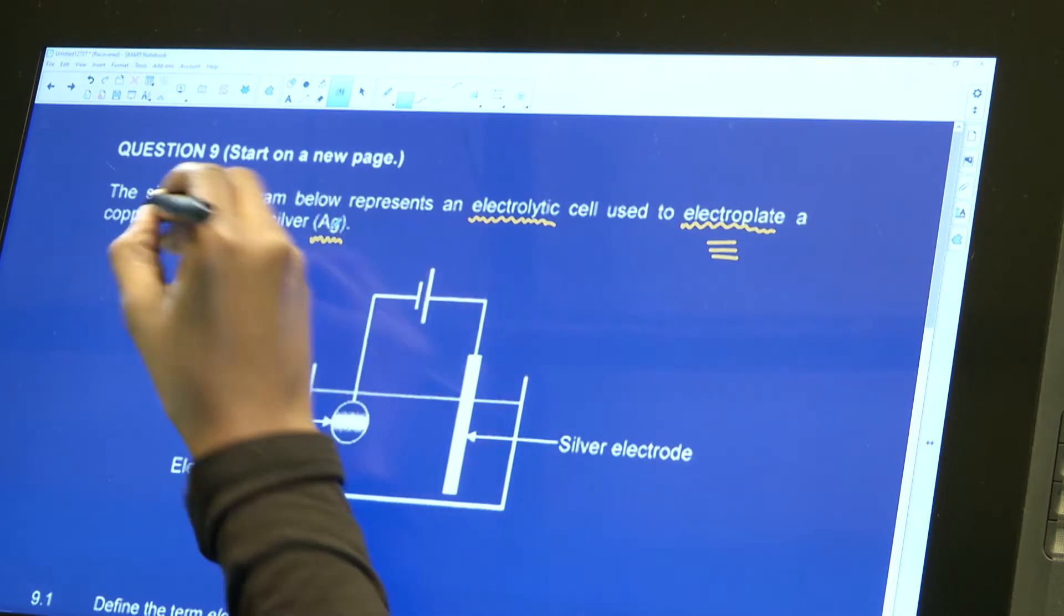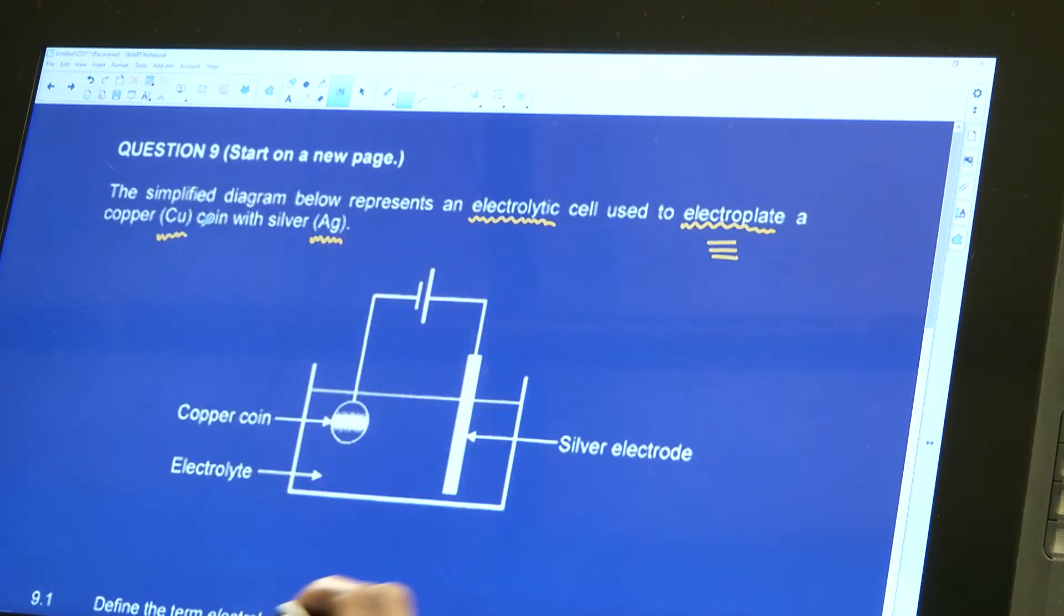You're going to need the 4B and 4A standard table where we're going to be identifying what is my anode, what is my cathode, where is oxidation and reduction taking place, what is the reducing agent and the oxidizing agent. I prefer using the 4B table. If your teacher has taught you another way, you can use whichever one.